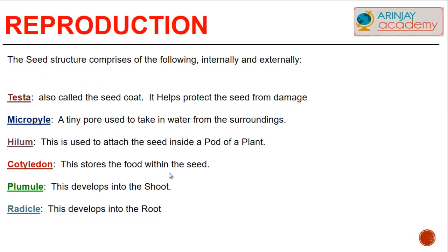We will have a look at the structure of the seed, both internally and externally. Externally, the testa, called the seed coat, helps protect the seed from damage. The micropyle is a fine tiny pore used to take in water from its surroundings. The hilum is the part of the seed that attaches it inside a pod of a plant. The cotyledon stores the food within the seed, whereas the plumule develops into the shoot and the radicle develops into the root.